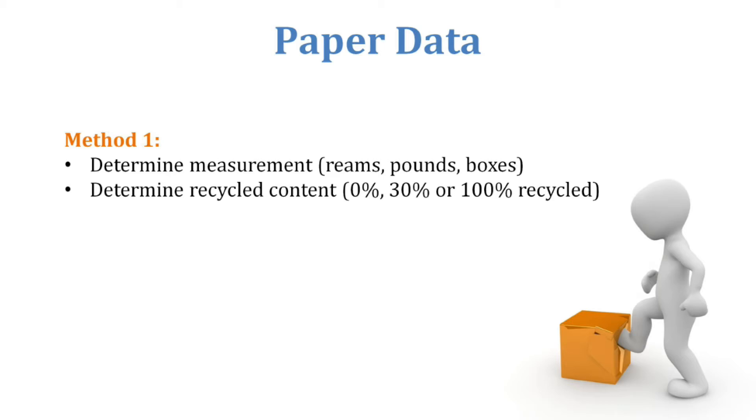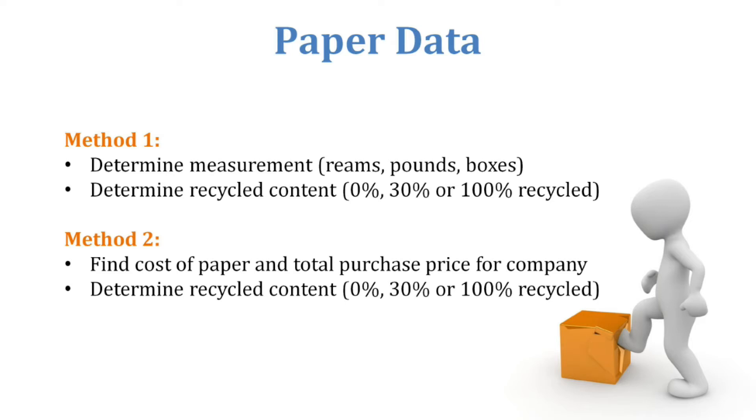For paper data, you're basically trying to find the reams, pounds, or boxes of paper you're using and the recycled content — whether it's zero, thirty percent, or a hundred percent. The best source is your office provider, such as Staples, Office Depot, or Office Max. If not, go to your invoices — your office manager will have that. If you can't get that, get your total cost of paper purchased and back it out. For example, if you spent twelve hundred dollars on thirty percent recycled paper, look up the cost of a box of that paper online and divide it out to find how many sheets you used.